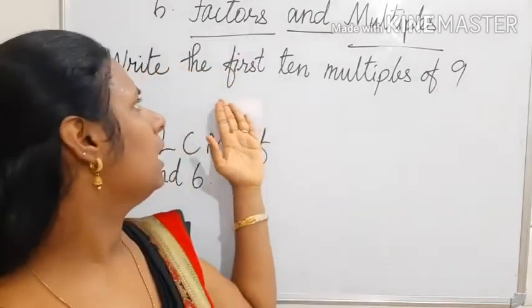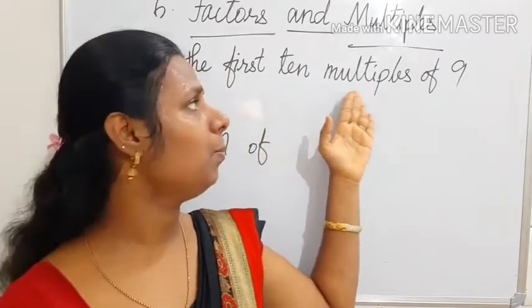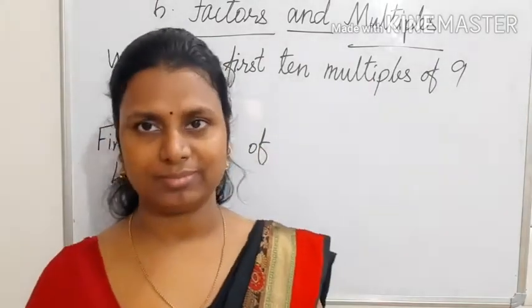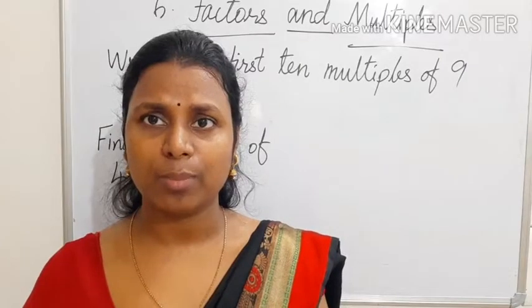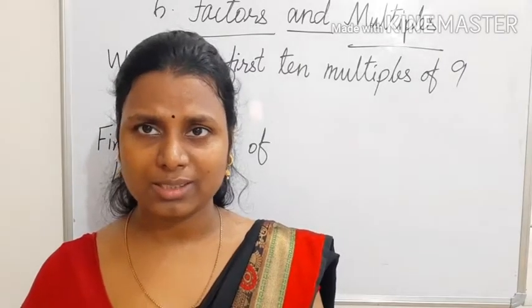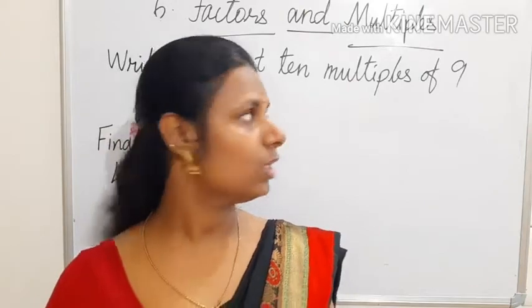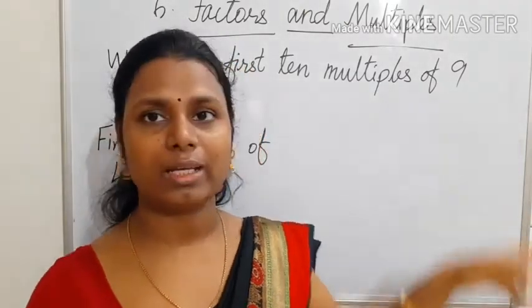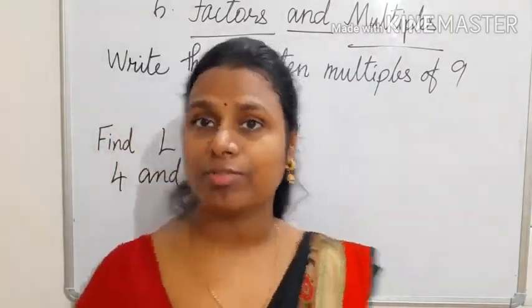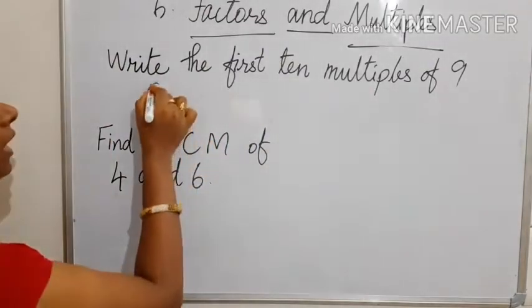The first question is: write the first 10 multiples of 9. You know the table of 9. I told you that the multiplication table is the multiples. So multiples of 9 means you are going to write the table of 9.